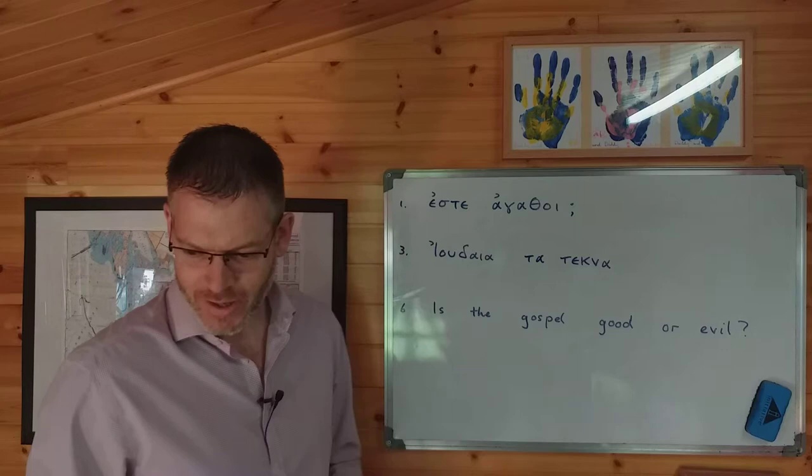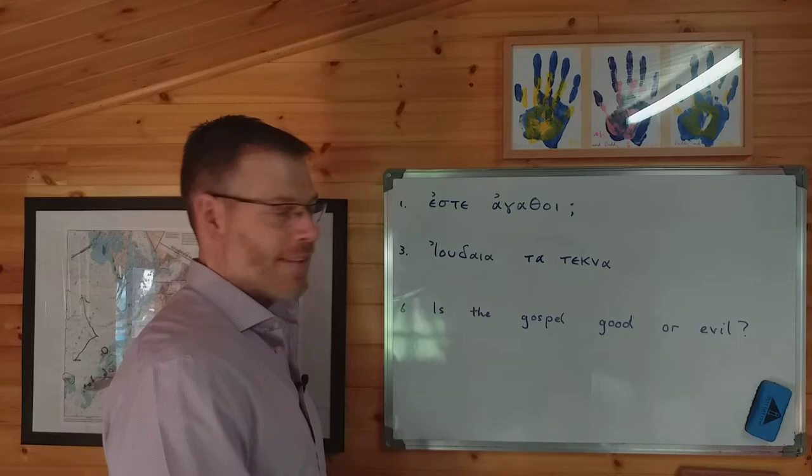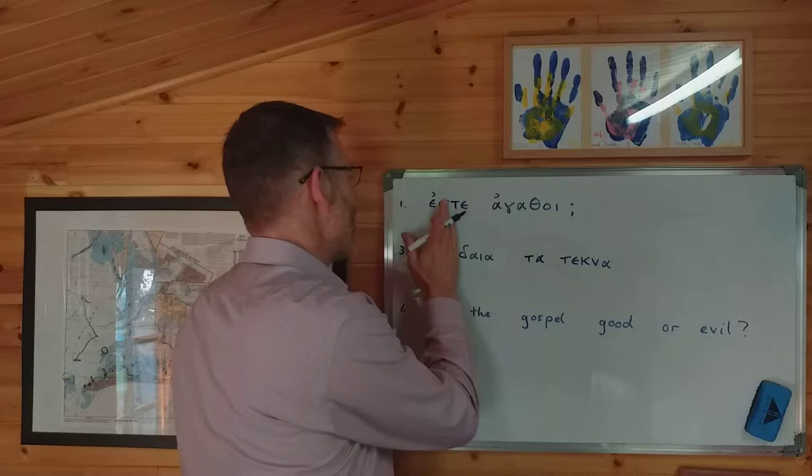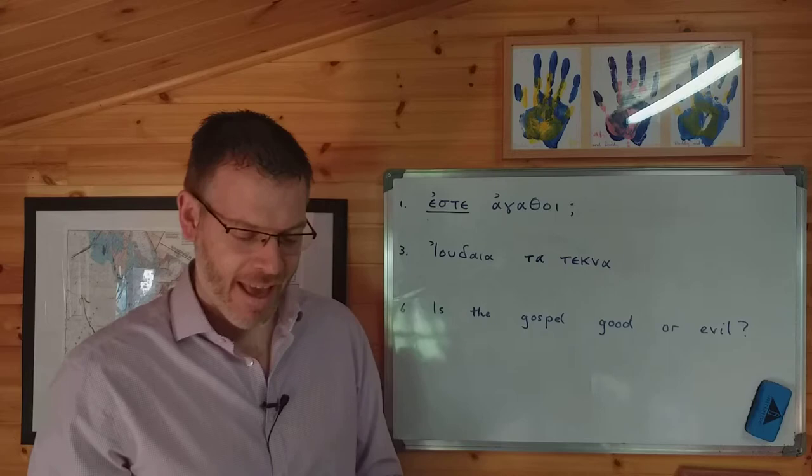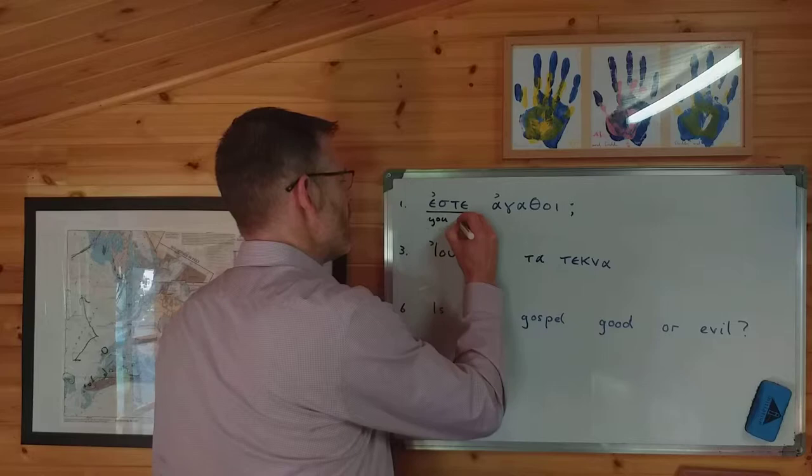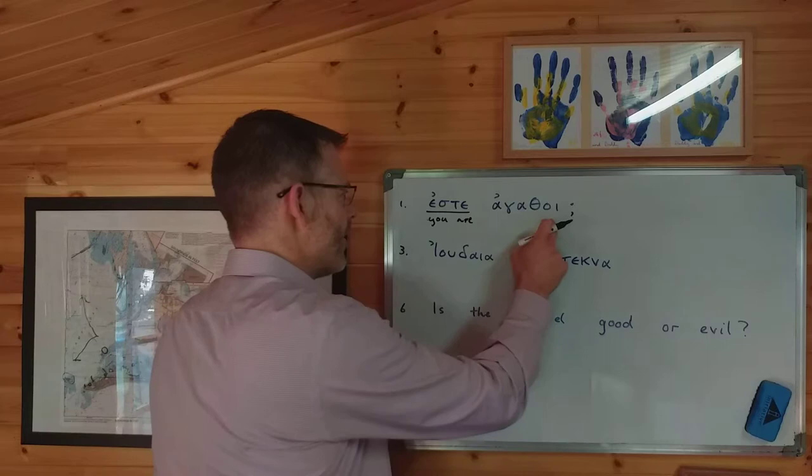Well, what do we do with any sentence? The first thing is that we find the verb, and here you are — este agathoi. Este comes from Amy: A, Estin, Esmen, Ester — second person plural meaning 'you are', you plural are. So that's the verb. Then what else have we got in the sentence?